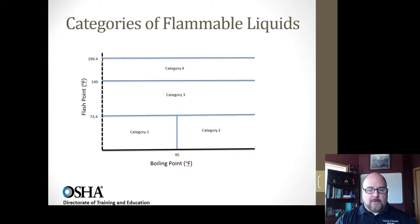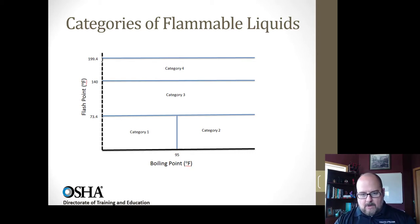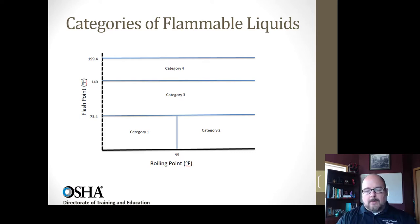The way OSHA breaks down its flammable liquids, flashpoint is the most dominant factor on the left of the chart, and boiling point on the bottom only dictates categories 1A and 1B. Category one is the most flammable — it has the lowest flashpoint and the lowest boiling point. Category two has a low flashpoint but a slightly higher boiling point. Then we get categories three and four. NFPA has a slightly different system.